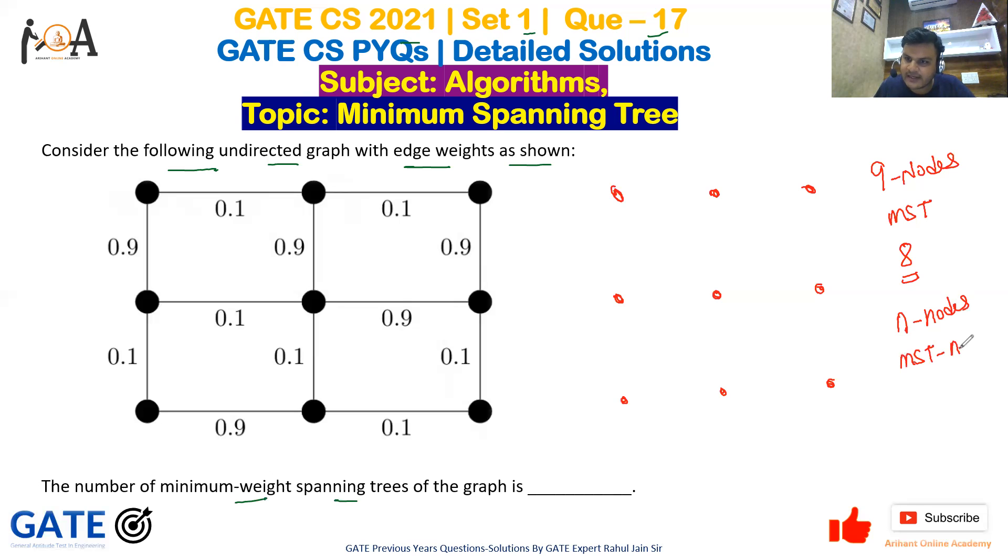n minus 1 number of edges would be part of its MST. Okay, now what I am doing is I will include all the edges of minimum weight.